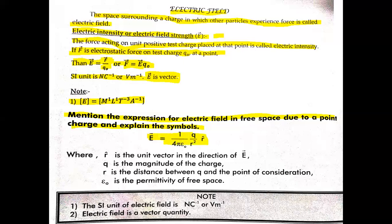So vector E equals 1 over 4πε₀ times q divided by r² times r̂. Here r̂ cap represents the unit vector, which has both magnitude and direction. We have to explain the symbols: in the direction of vector E, in the direction of electric field, q is the magnitude of the charge.